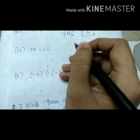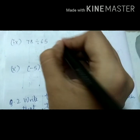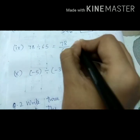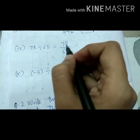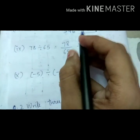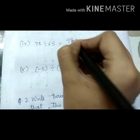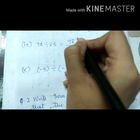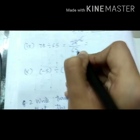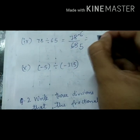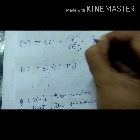Next, 78 divided by 65. 78 upon 65. Both numbers are divisible by 13. So 13 sixes are 78, 13 fives are 65. 6 upon 5.